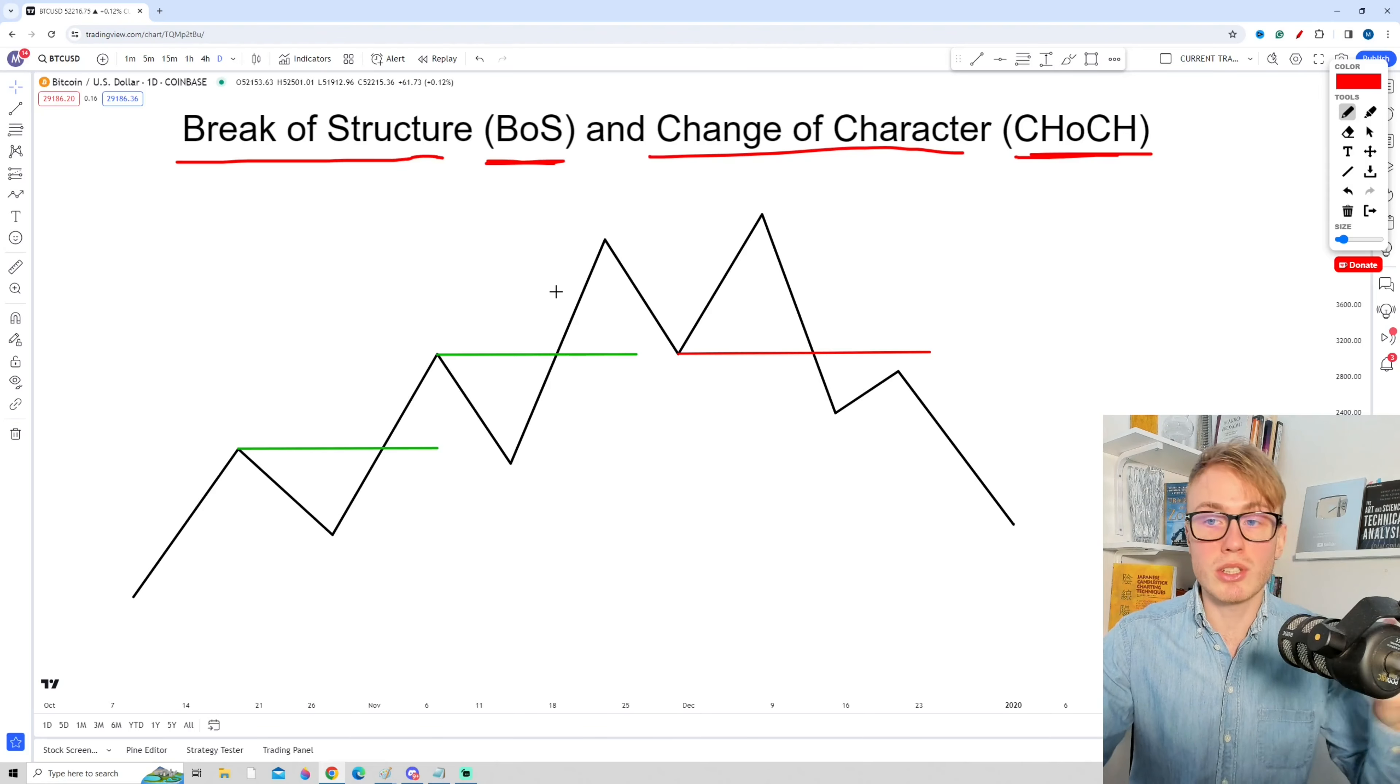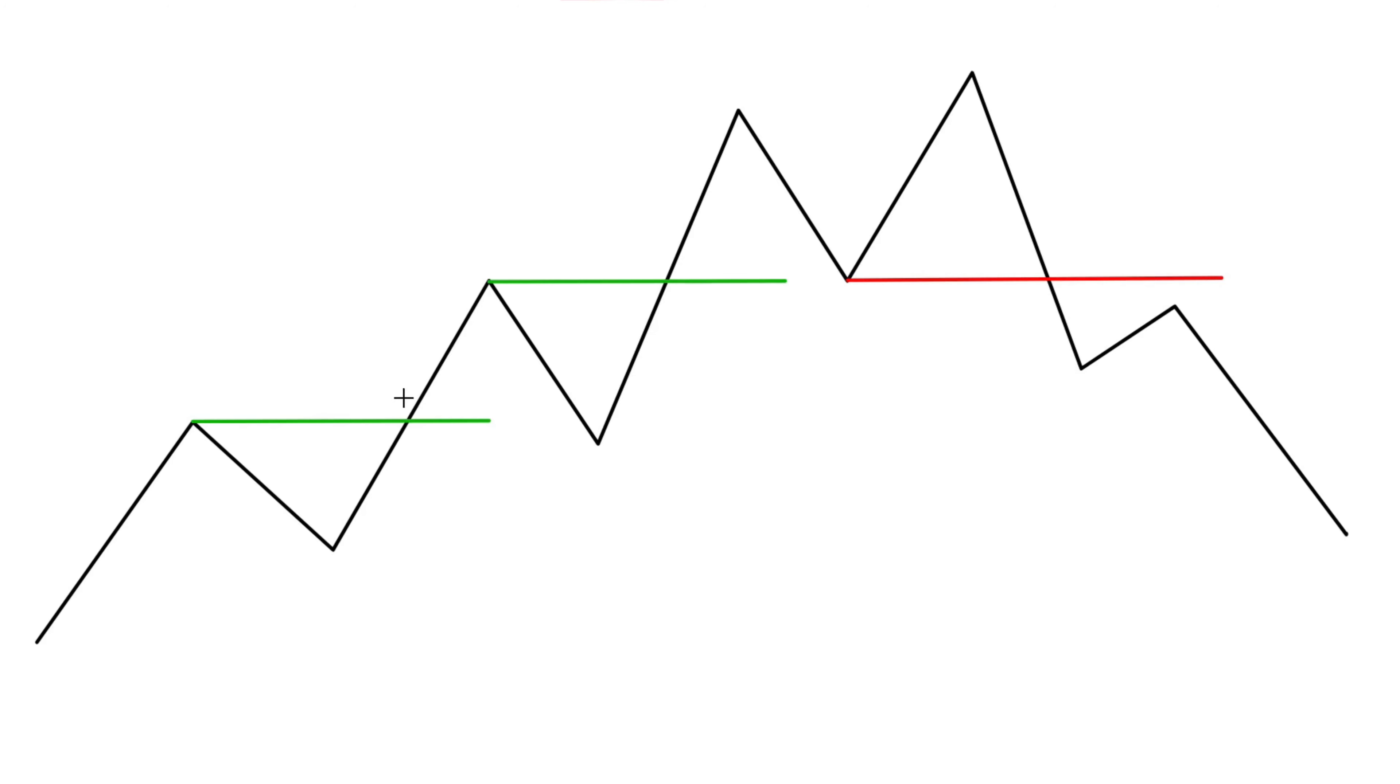Let's start by taking a look at break of structure. In very simple terms, a break of structure is when we break the structure of the existing trend. For example, at this point right here the price broke the previous high. In order to maintain an uptrend we need to break and print a higher high, so this point right here is a break of structure because we break to a new high.